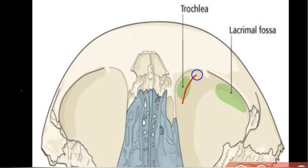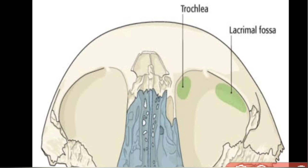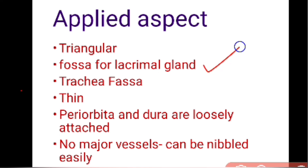The periorbita on the orbital side and the dura on the cranial side are both loosely attached to the roof, so they can be easily stripped during orbitotomy. There are no major vessels perforating the roof, and it can be easily nibbled in transfrontal orbitotomies. In summary: it has the fossa for the lacrimal gland and trochlear fossa, is thin, has loosely attached periorbita and dura, and has no major vessels.